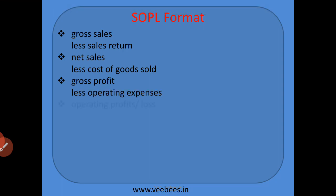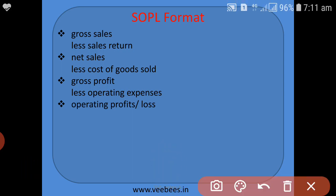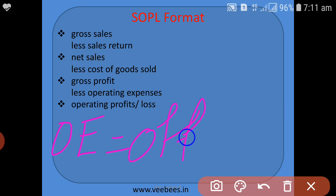From gross profit, we will firstly deduct operating expenses. Operating expenses are the expenses incurred for operating purposes. Operating expenses include: office expense, also called administration expense.